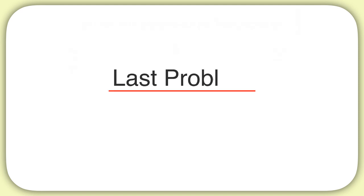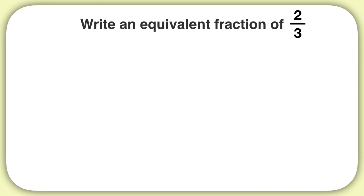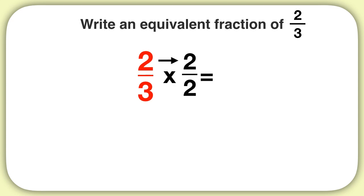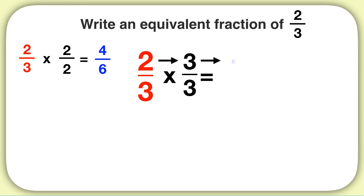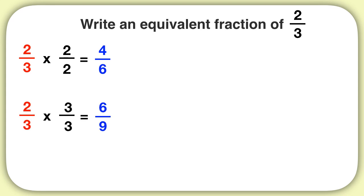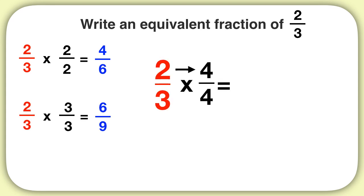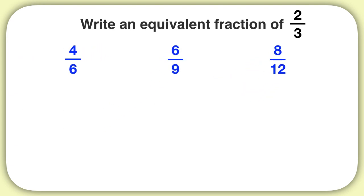Here's your last problem for this video. Write an equivalent fraction of 2 thirds. You could have taken 2 thirds and multiplied by 2 over 2: 2 times 2 is 4, and 3 times 2 is 6, so 4 sixths is equivalent. Or 2 thirds times 3 over 3: 2 times 3 is 6, and 3 times 3 is 9, giving 6 ninths. Or 2 thirds times 4 over 4: 2 times 4 is 8, and 3 times 4 is 12, so 8 twelfths is another equivalent fraction.